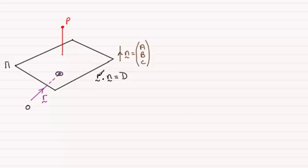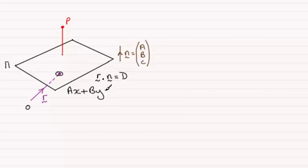then if I dot (x, y, z) with the normal vector (a, b, c) and it equals d, we get the Cartesian form of the plane, which again you should be familiar with: Ax plus By plus Cz equals that constant d. Do check out the Cartesian form of a plane if you're unsure of this.